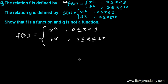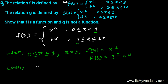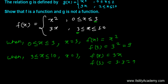Notice that x = 3 is a common point in both pieces. When x is in [0, 3], f(x) = x², so f(3) = 3² = 9. When x is in [3, 10], f(x) = 3x, so f(3) = 3 × 3 = 9 as well.